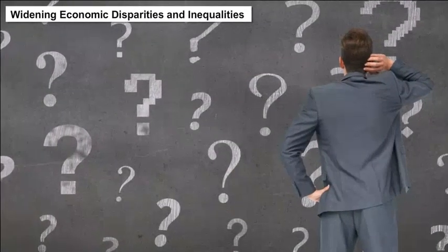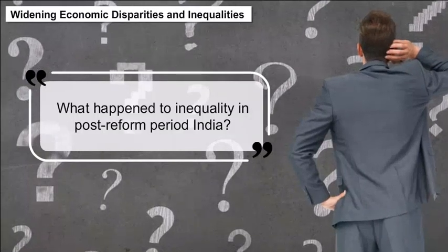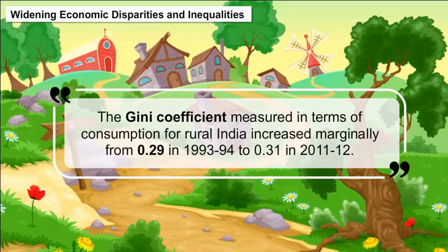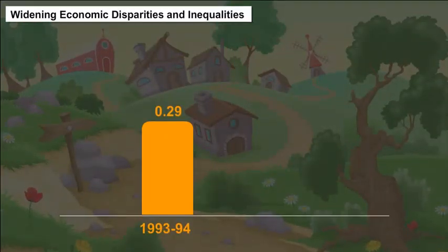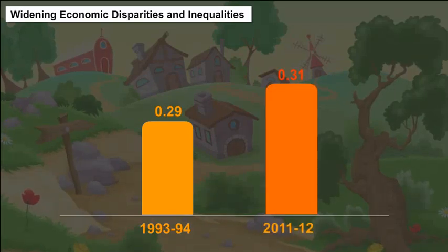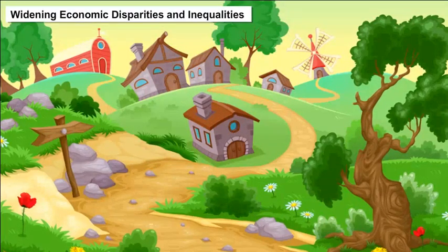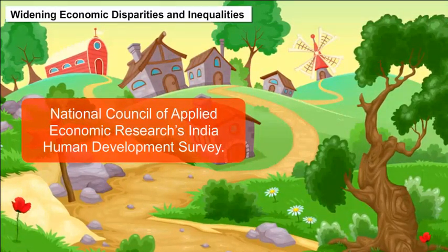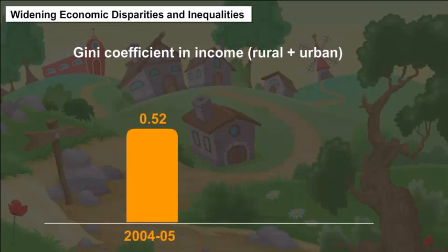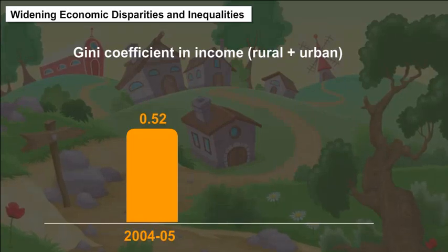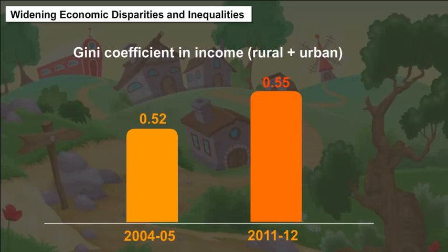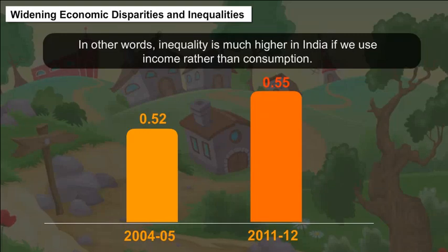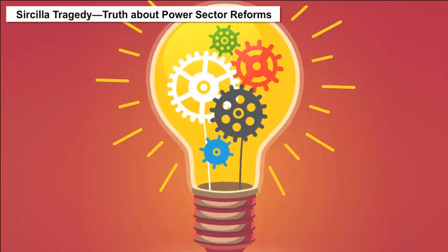Widening Economic Disparities and Inequalities: The Gini coefficient measured in terms of consumption for rural India increased marginally from 0.29 in 1993–94 to 0.31 in 2011–12. Using income data from the National Council of Applied Economic Research's India Human Development Survey, the Gini coefficient for rural plus urban income was 0.52 in 2004–05 and increased to 0.55 in 2011–12. In other words, inequality is much higher in India when measured by income rather than consumption.